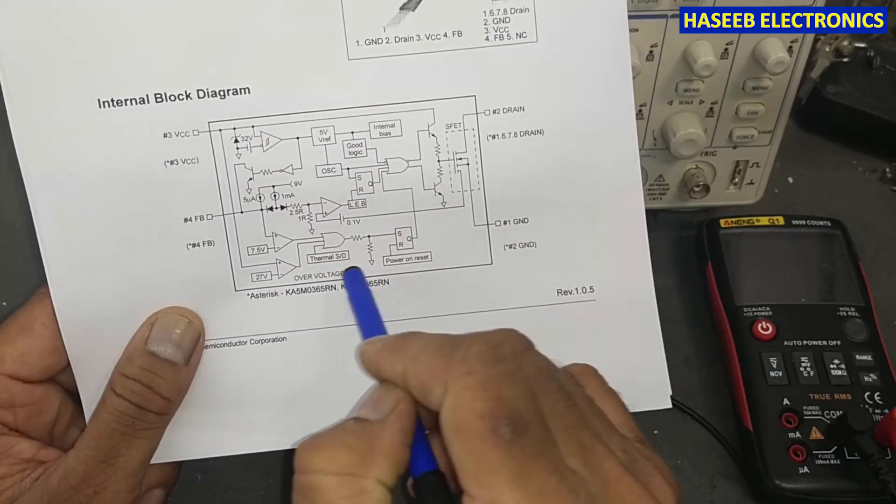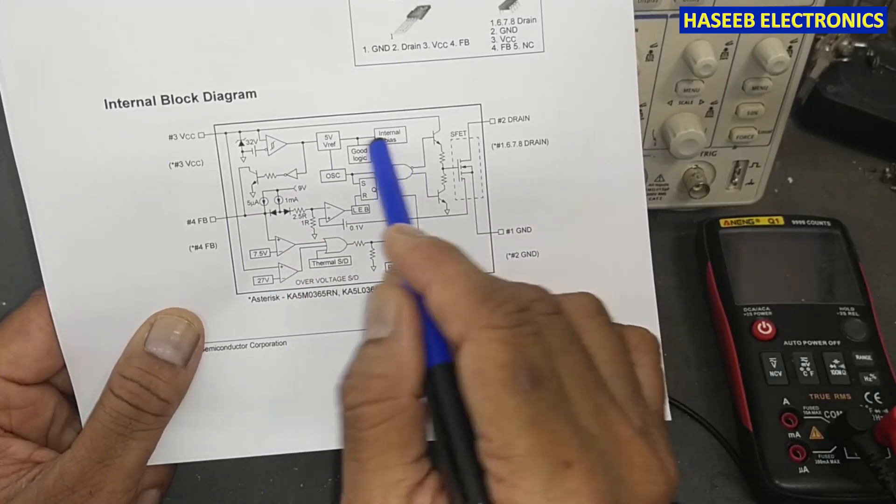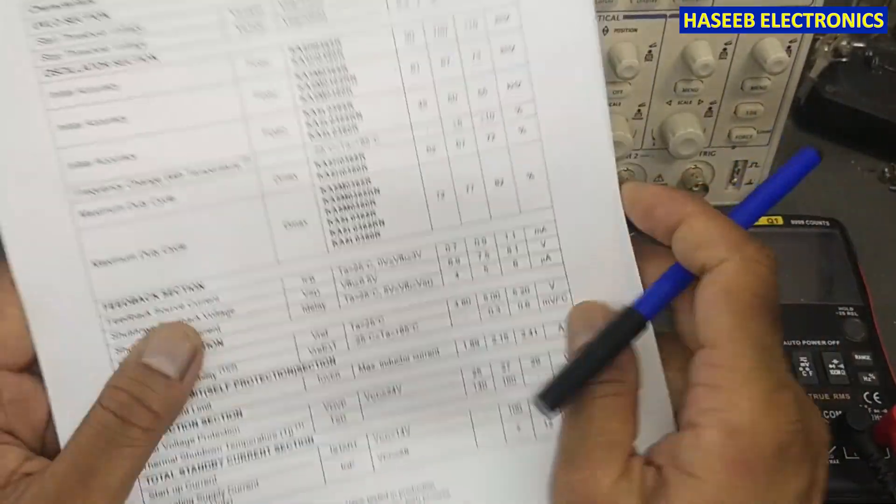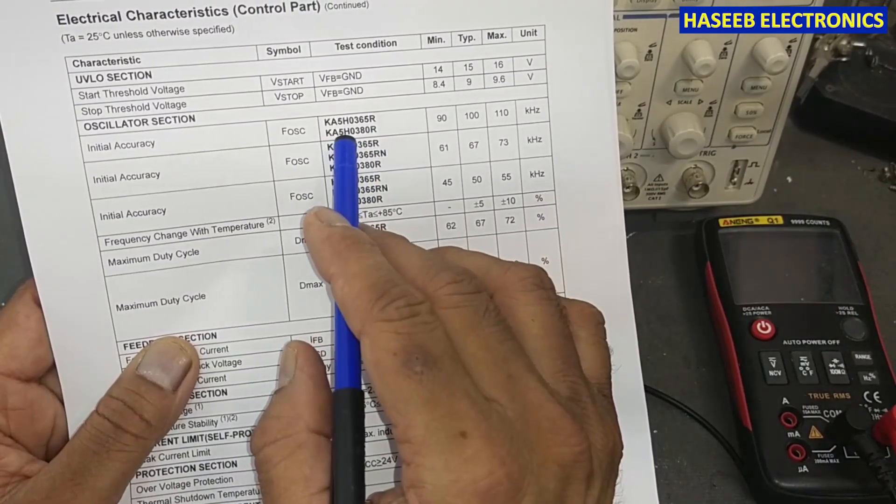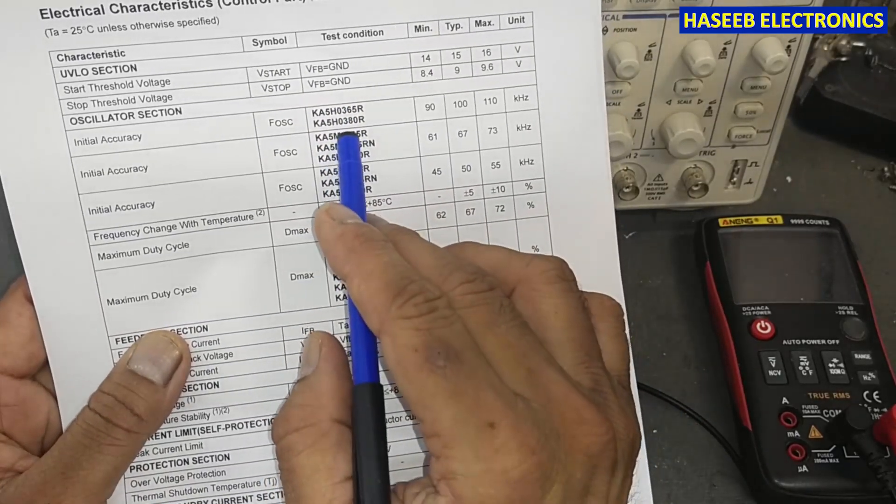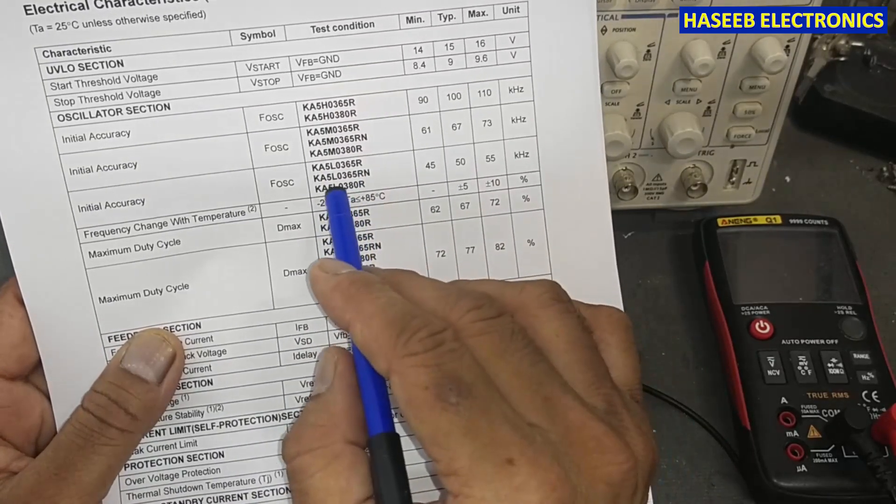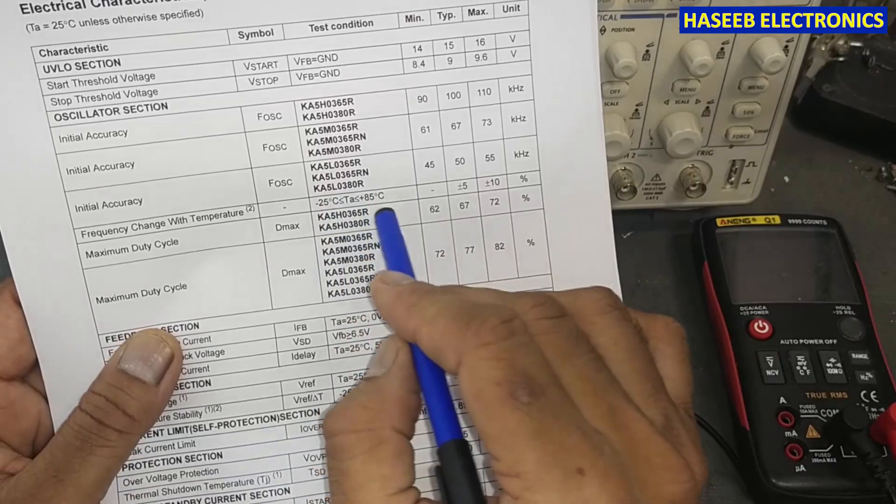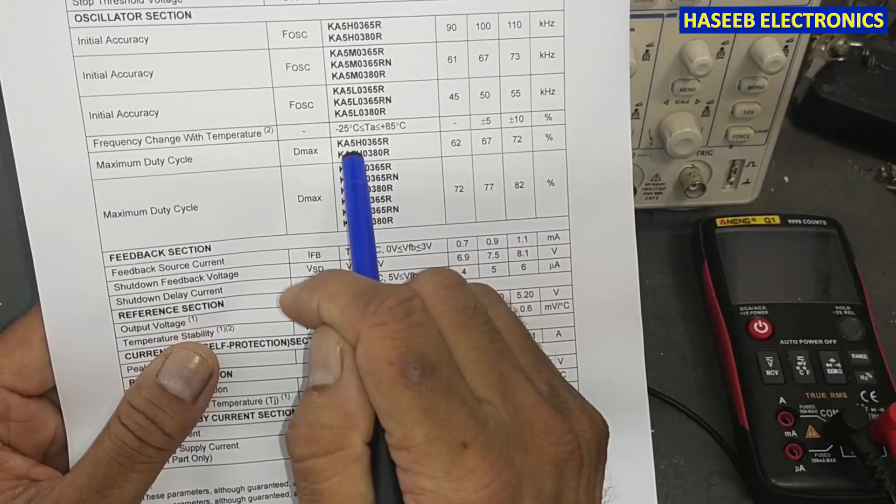It has over voltage protection circuit, different circuits inside, thermal protection, and internal oscillator. If you see its switching frequency: if it is KA5H0365 or H0380 it is 100 kilohertz - H is high frequency, M is medium frequency that is 67 kilohertz.